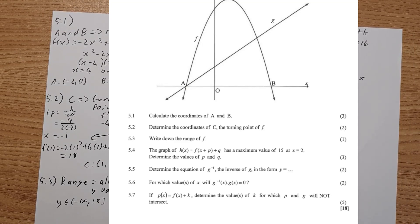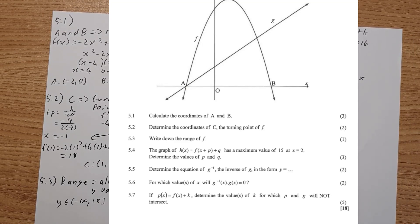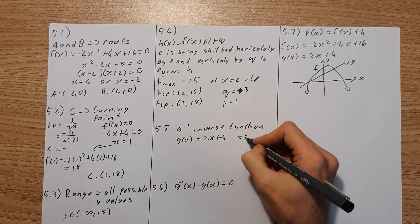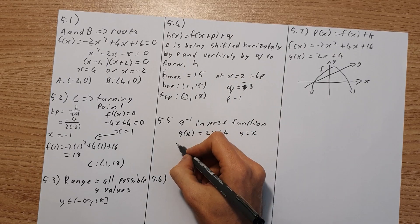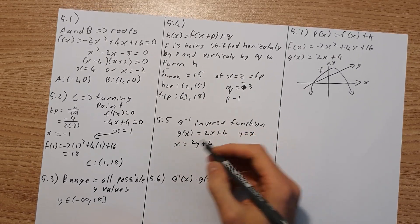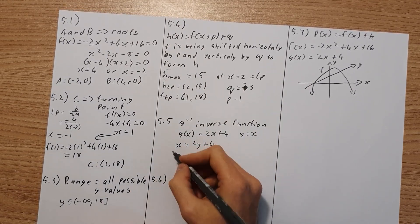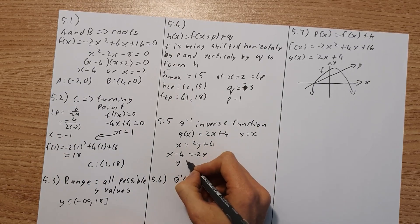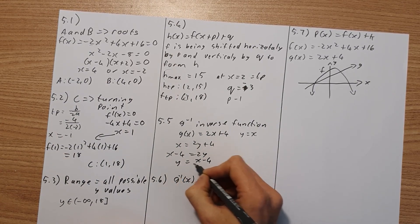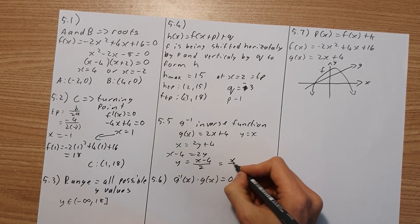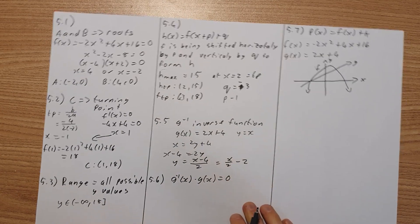Now g negative 1 is the inverse of the function. That's what's being asked in 5.5. It says determine the inverse of g. So all we do is we set y equal to x. So therefore we have x equals 2y plus 4. Now we just rewrite in terms of y. So I'm going to take that over. So x minus 4 equals 2y, so y equals x minus 4 all over 2. You can simplify that. It's equal to x over 2 minus 2.